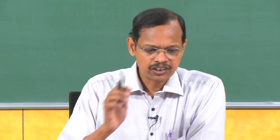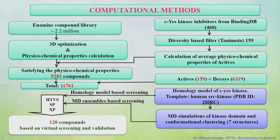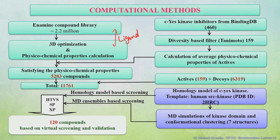First, we get the Enamine library of 2.2 million compounds, optimize them, and check all parameters to ensure stability. Once optimized, we calculate the physicochemical properties — for example, molecular weight, hydrogen bond donors, acceptors, and molar refractivity. Then from the 2.2 million ligands, we can reject several because of the compound rejection criteria discussed earlier, so we do not proceed to screening and final checking with all of them.